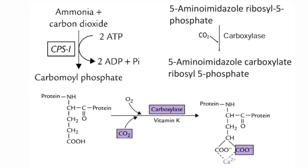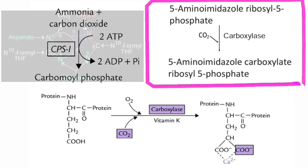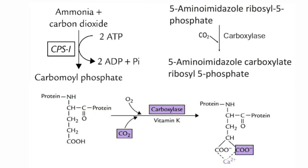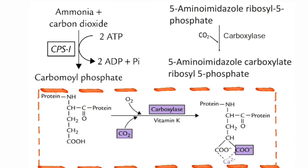The second example is that carbon number six of the purine ring is obtained from carbon dioxide, and here the addition of carbon dioxide catalyzed by carboxylase is also a biotin-independent reaction. The last example involves the post-translational modification of certain clotting factors — factor 2, 7, 9, and 10 — which are activated by carboxylation. In this case, the carboxylase enzyme does not require biotin as the coenzyme; instead, it requires vitamin K as the coenzyme.